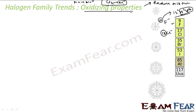Since chlorine has tendency to accept electrons, it has tendency to reduce itself — its oxidation state decreases. Since chlorine has tendency to reduce itself, it has tendency to oxidize something else, meaning it has good oxidizing property. All halogens have a very strong tendency to accept electrons, making them very good oxidizing agents. The oxidizing power decreases down the group because as the size of the nucleus increases, the tendency to attract electrons decreases.